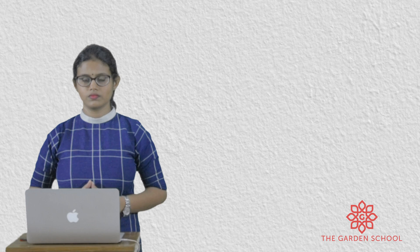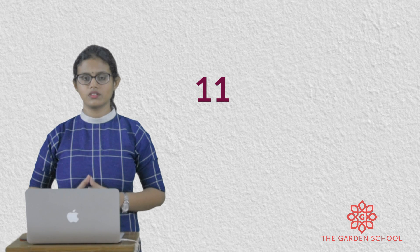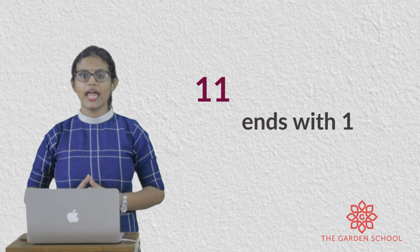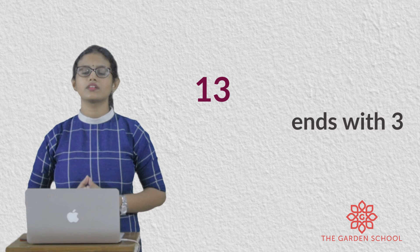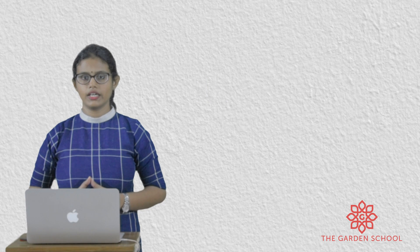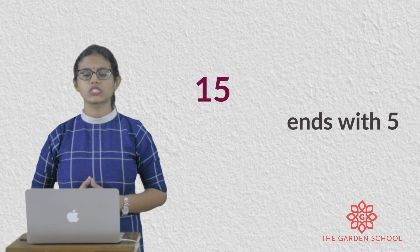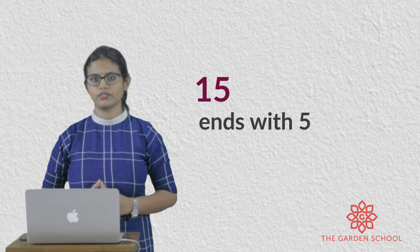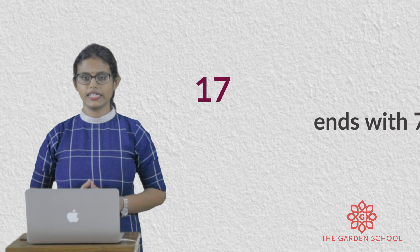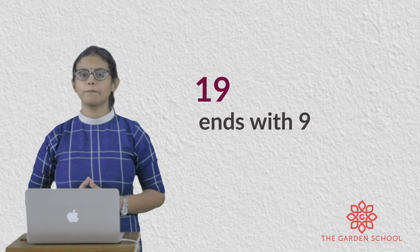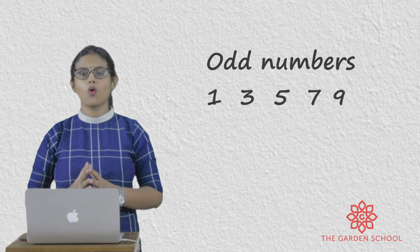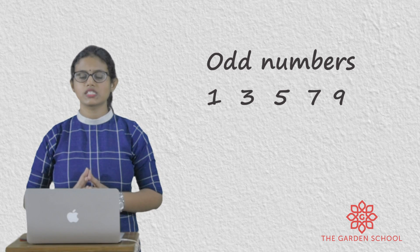You have learnt odd numbers till 20. If I say number 11, 11 ends with number 1. Number 30 ends with number 3. Next one, 15 — it ends with number 5. Then 17 — it ends with number 7. 19 — it ends with number 9. So odd numbers are numbers that end with 1, 3, 5, 7, 9.